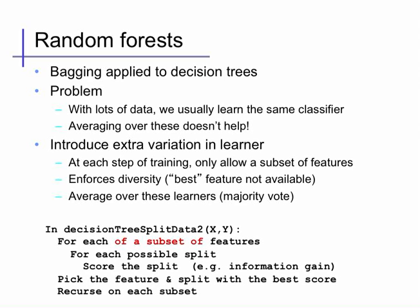This is again extremely simple to implement. In our decision tree recursive data splitting function, instead of searching over every possible feature and every possible split, we first generate a random subset of the features of some size and search only over that set and all splits. Otherwise the procedure works exactly the same way as before.